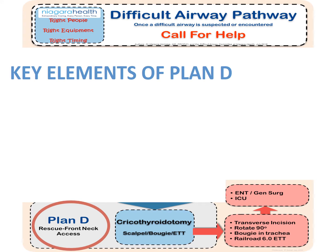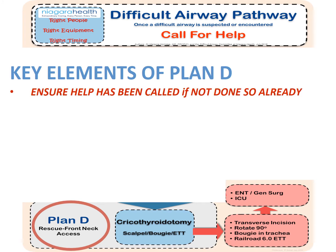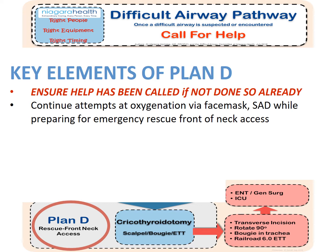The key elements in Plan D: if you haven't called for help, you need to do that now. It's going to require a couple of individuals working together — one person trying to oxygenate the patient from the top while the other person is doing the actual technique. Remember, we are going to try to keep oxygenating this patient while we're getting ready to go at the front of the neck and secure a surgical airway.